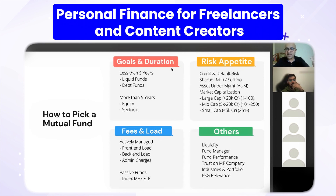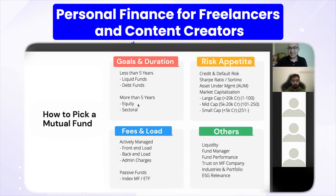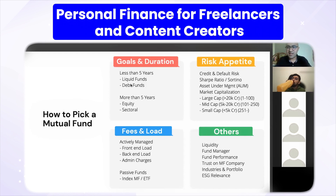Large cap are the top 100 companies, mid cap is 101 to 250, and small cap is 250 onwards. For actively managed funds, a portfolio manager decides what percentage to put in each sector or company — the fees are higher because someone is doing all this analysis. A passive fund is essentially putting money in Nifty and Sensex — saying that if the top 50 companies grow, you grow with them.